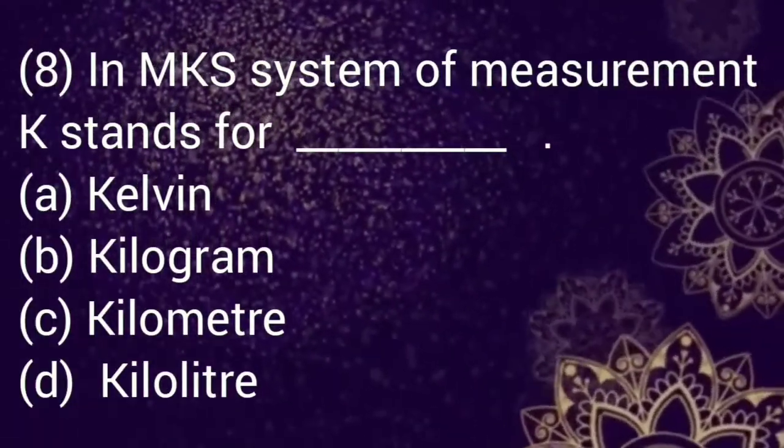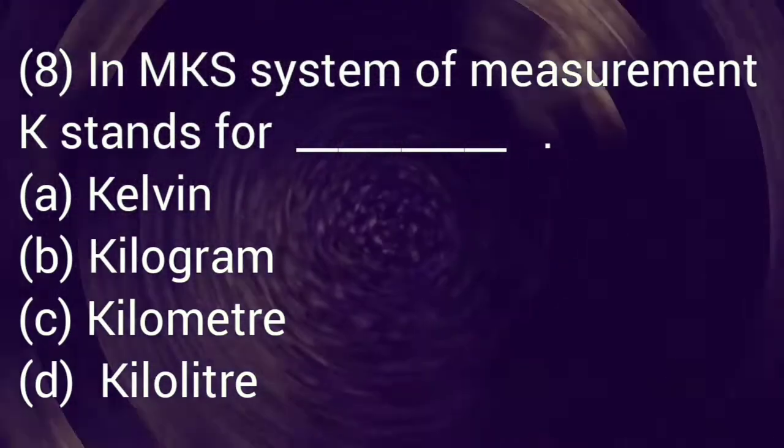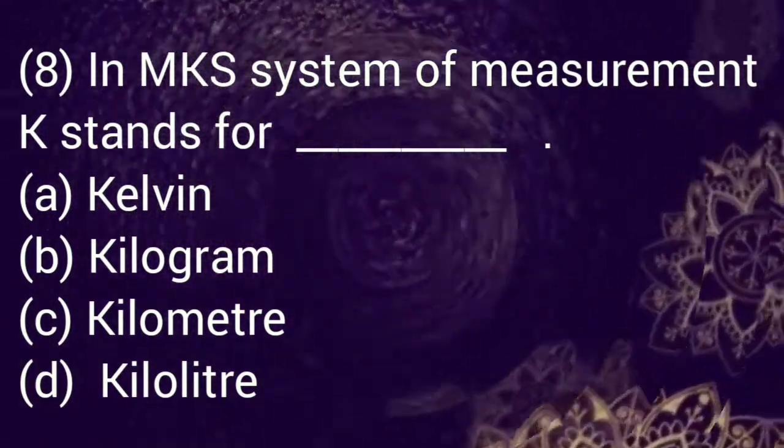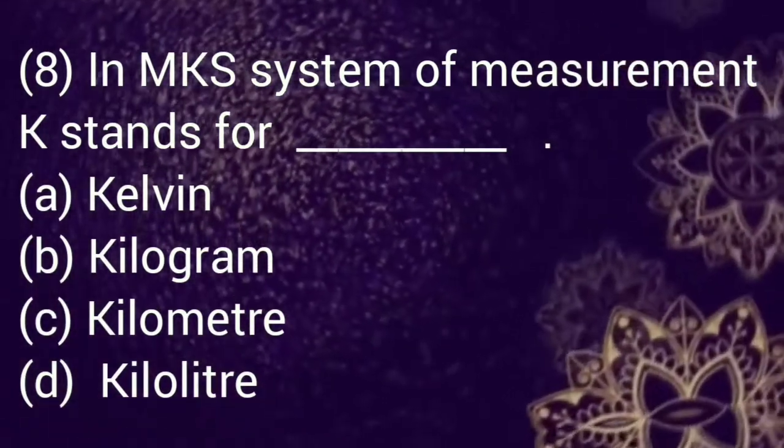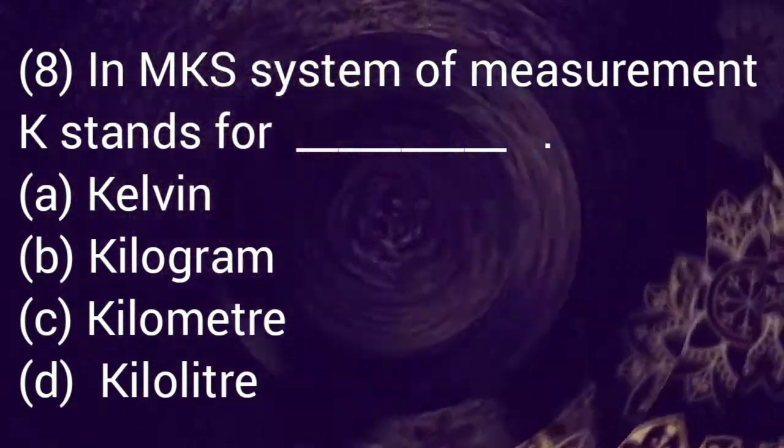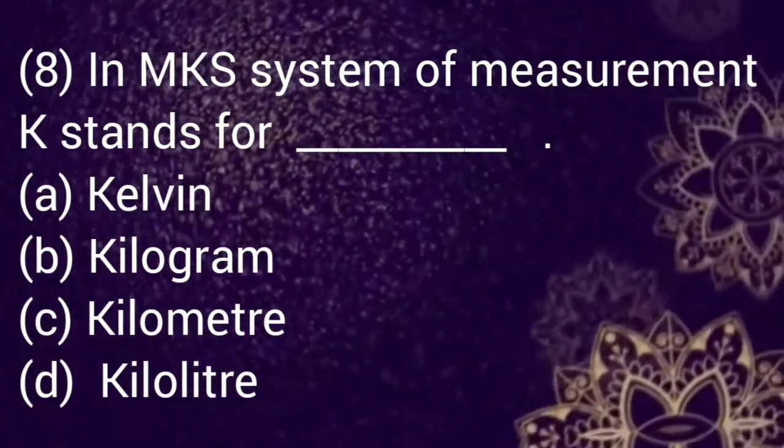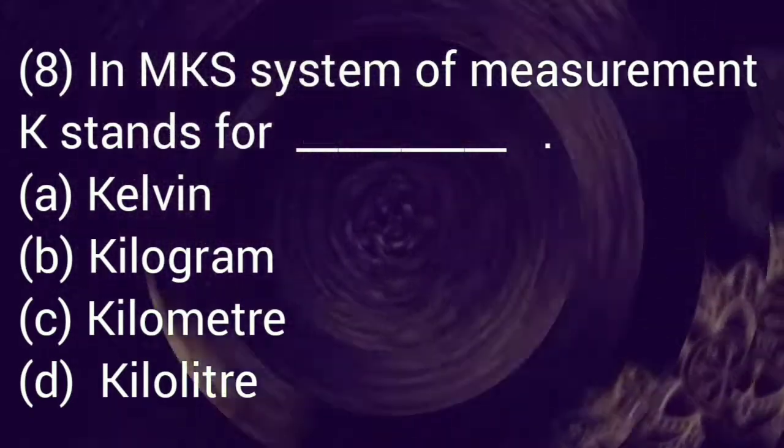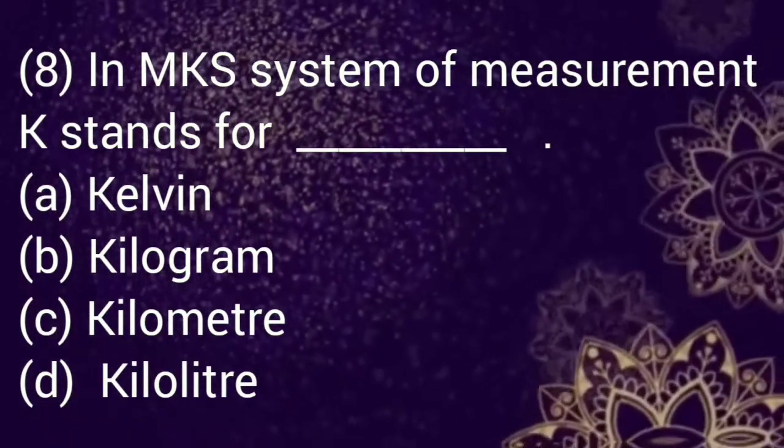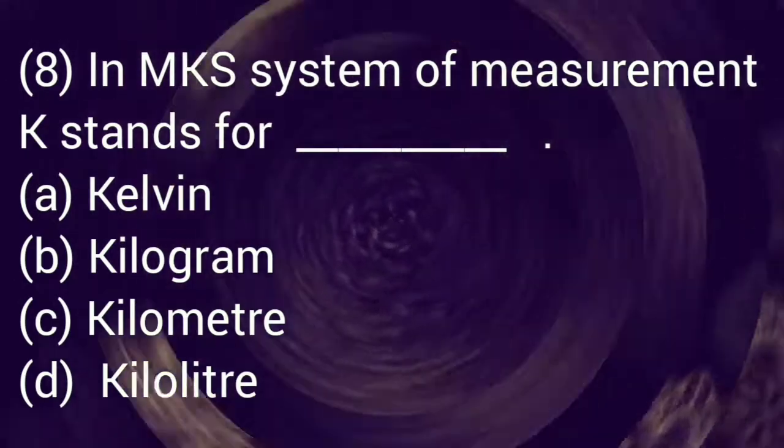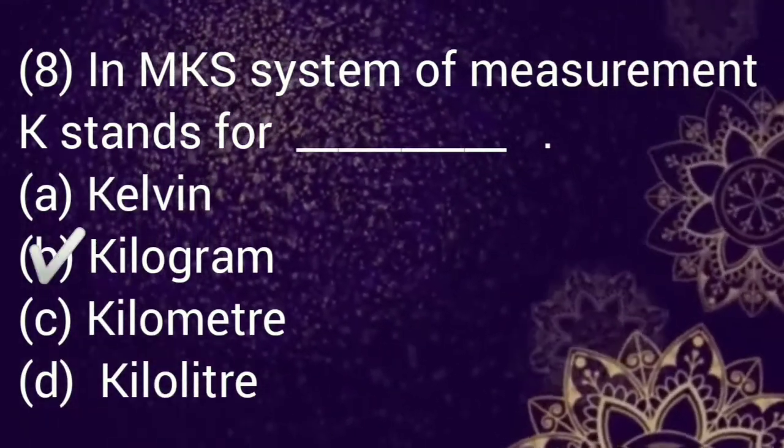Let's move on to the next question. In MKS system of measurement, K stands for dash. Option a: kelvin, b: kilogram, c: kilometer, d: kilo. Select your answer. Correct option is b, kilogram.